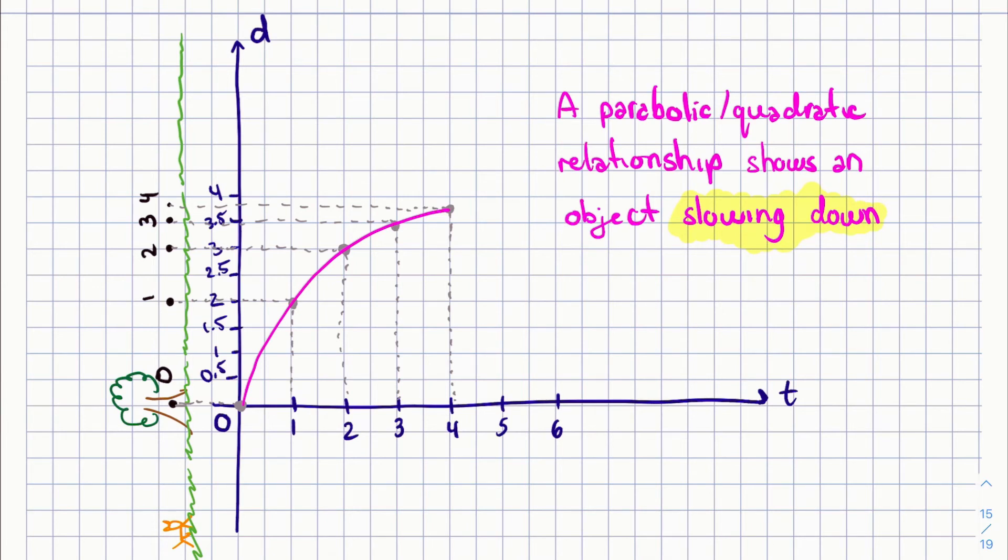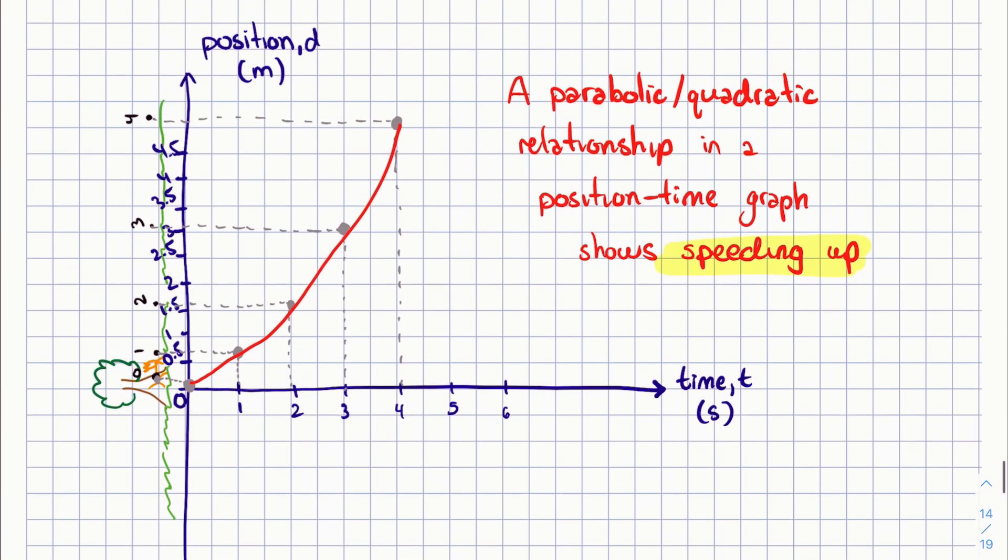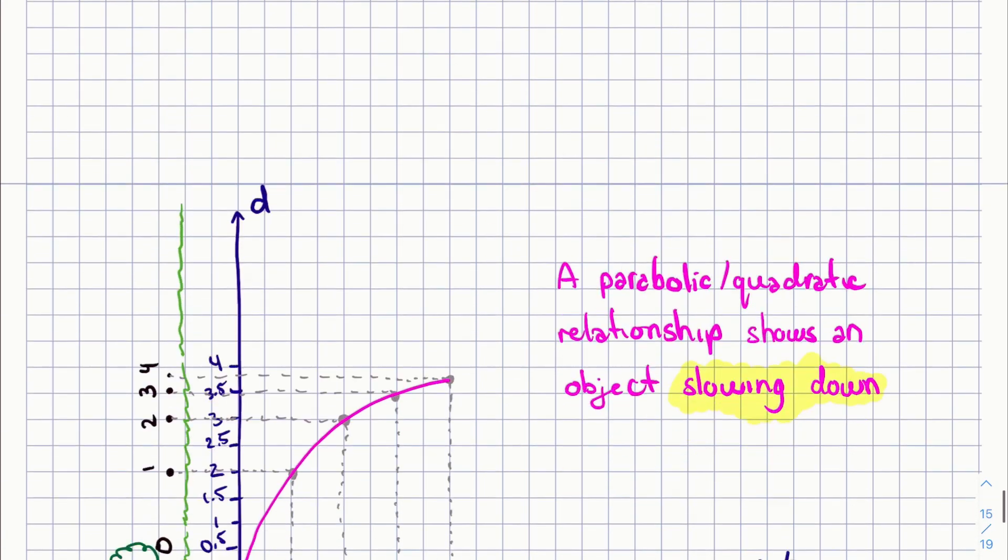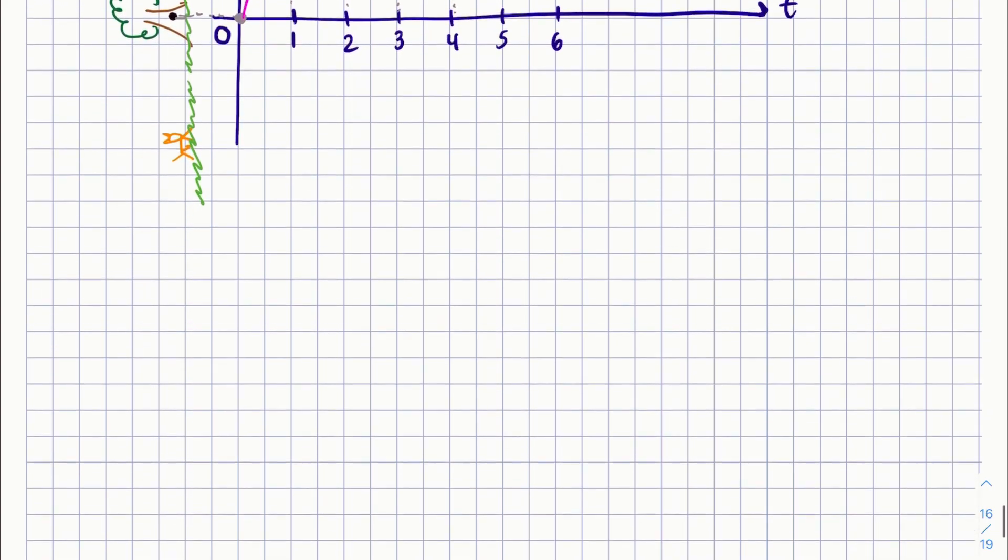We can conclude that a parabolic, aka quadratic, relationship shows that an object is slowing down. Now we come up with a bit of a problem, right? Because if you recall the previous graph, we drew a similar conclusion. If it's a parabolic relationship, is it speeding up or slowing down? We need some more math to distinguish between the two types of motion.